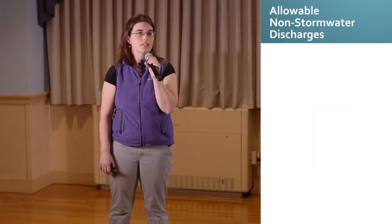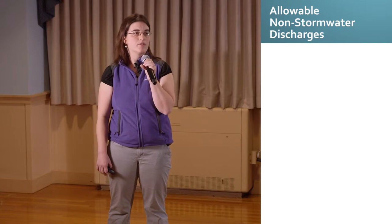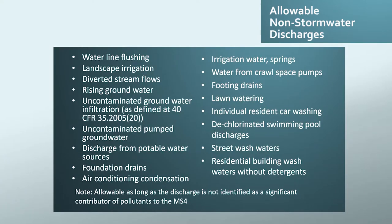An illicit discharge is anything non-stormwater that enters the storm drain system, except for allowable non-stormwater discharges. The permit lists all types of discharges considered allowable, but they're only allowable as long as the discharge is not identified as a significant contributor of pollutants to the MS4. Examples include waterline flushing, uncontaminated groundwater, individual resident car washing, and dechlorinated swimming pools.